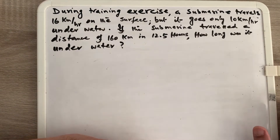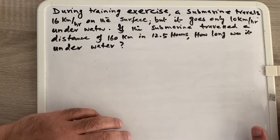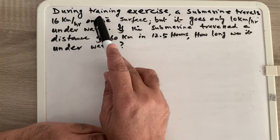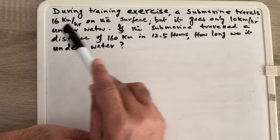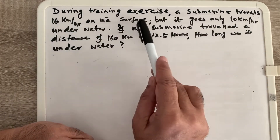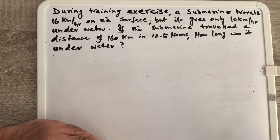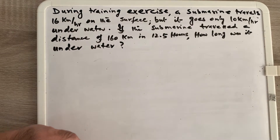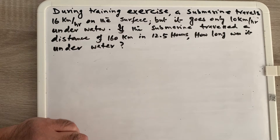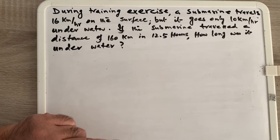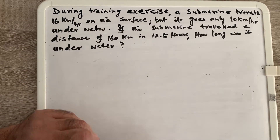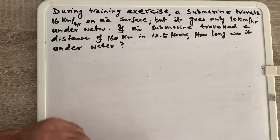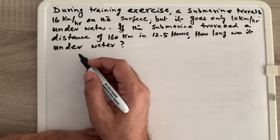This is a word problem. During a training exercise, a submarine travels at 16 kilometers per hour on the surface but goes only 10 kilometers per hour underwater. We have two variables: x for travel on the surface and y for travel underwater.